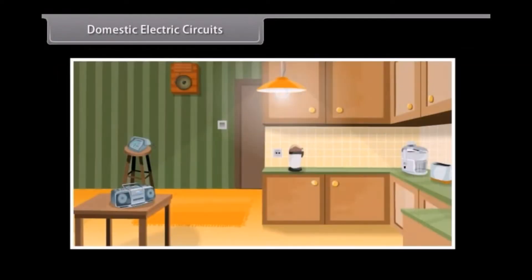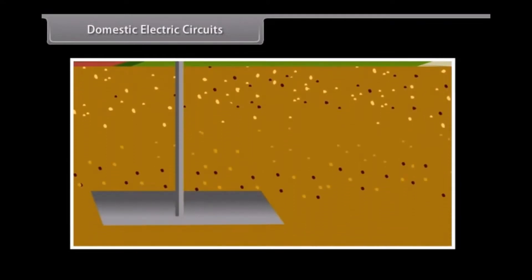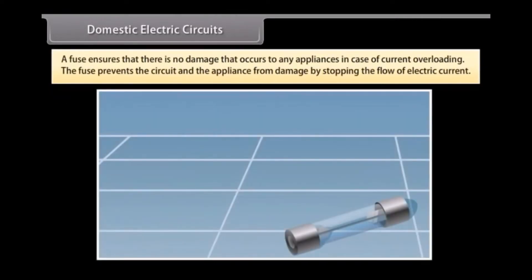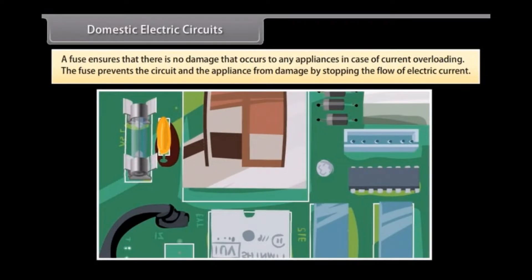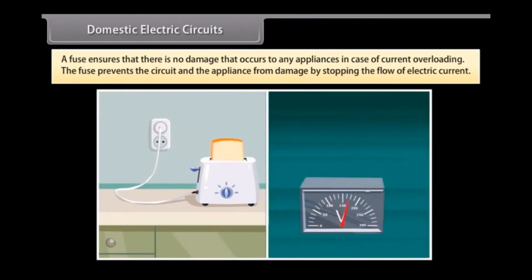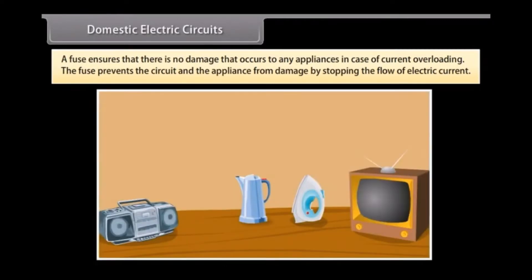There are different circuits used for different appliances being used in the house. The earth wire is connected to a metal plate deep into the earth to avoid receiving any severe shock in case of any leakage of current while using the appliances. A fuse is an important part of all circuits. It ensures that there is no damage that occurs to any appliances in case of current overloading. Overloading occurs when the live wire and the neutral wire come in contact with each other or there is a rise in the supply voltage. In this case, the fuse prevents the circuit and the appliance from damage by stopping the flow of electric current.